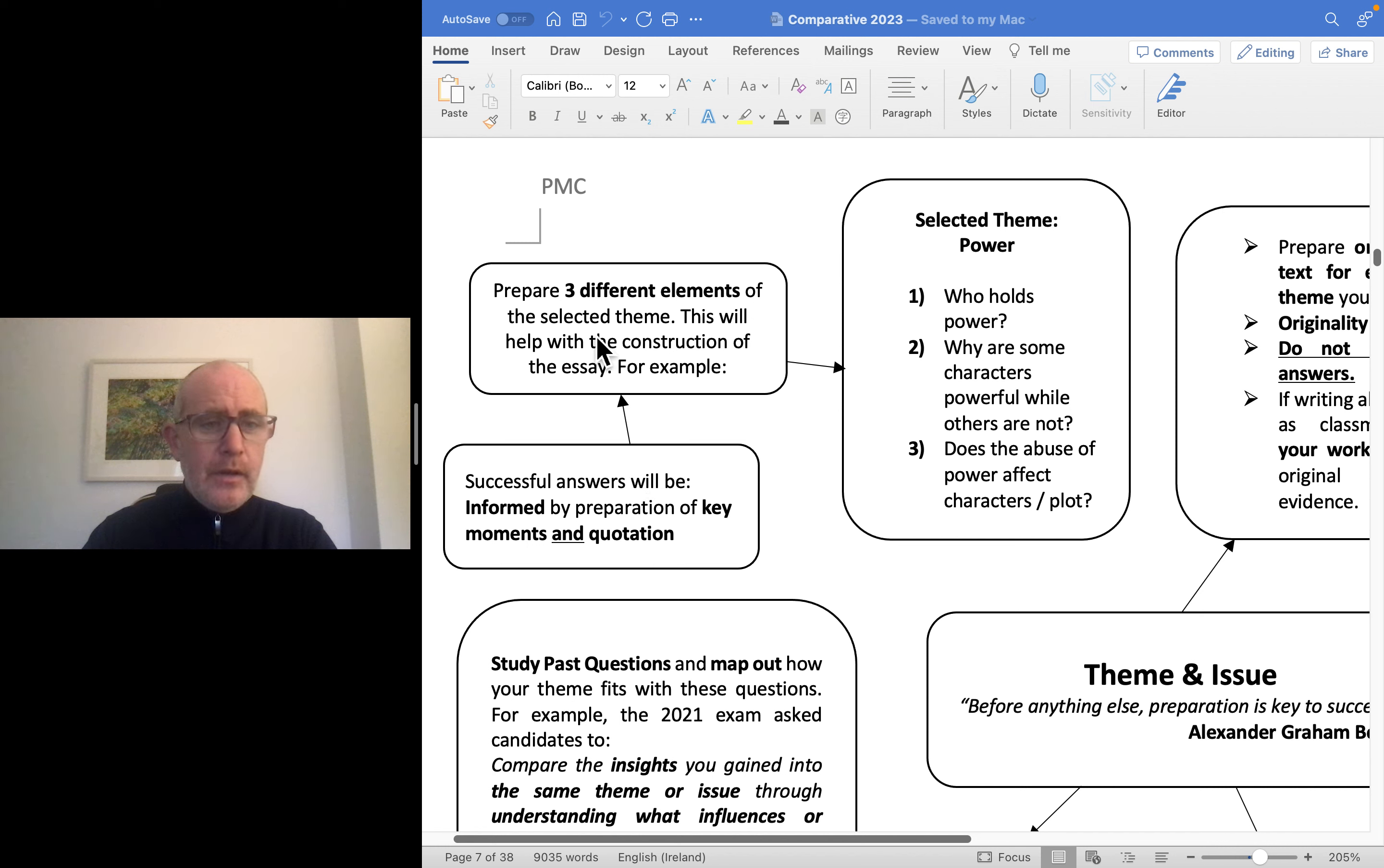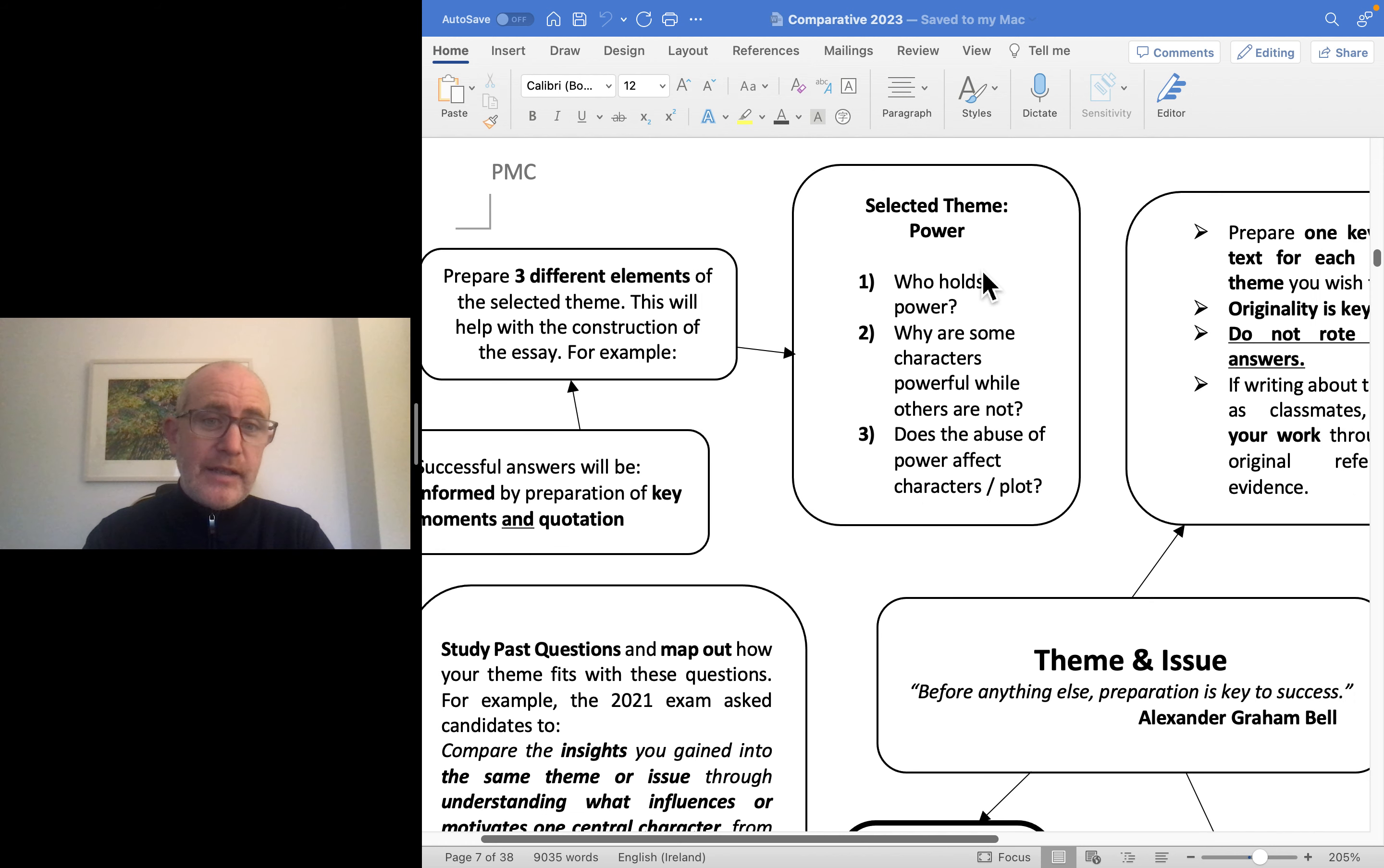When doing your preparation, try to pick three different elements of your theme and have those prepared across your texts. For example, if the theme is power - I like that theme, it's notable in almost every text - have key moments showing who holds power, somebody being powerful and exercising their power. Then think about the power balance or imbalance: who has power, who doesn't, why don't some characters have power? Is it because they're women like in A Doll's House or Handmaid's Tale, or because they're children like in All the Light You Cannot See or Philadelphia Here I Come?